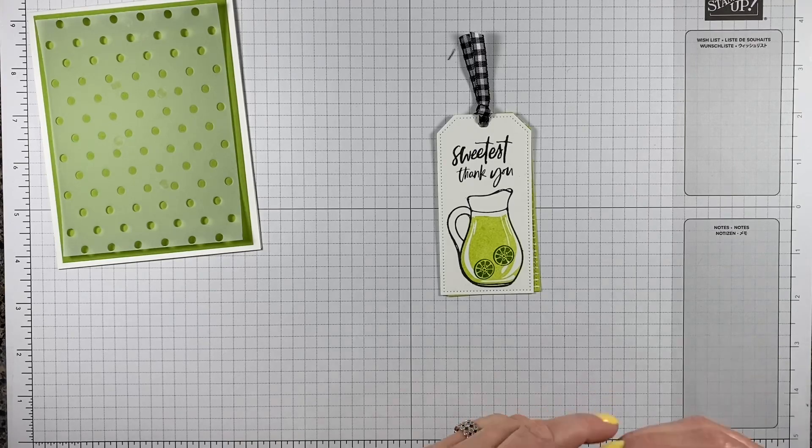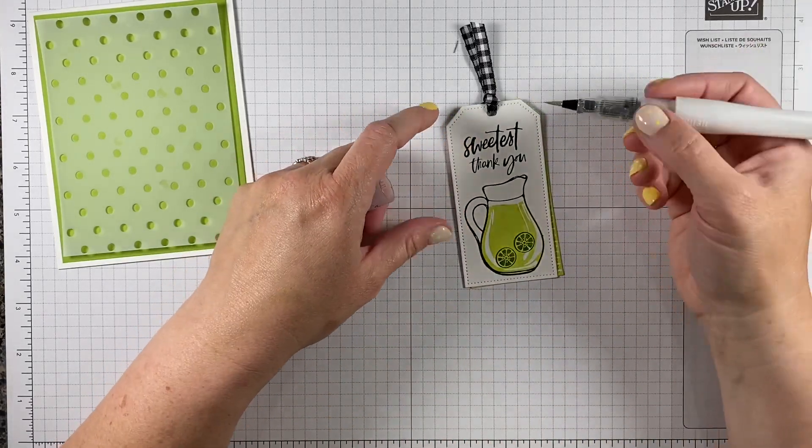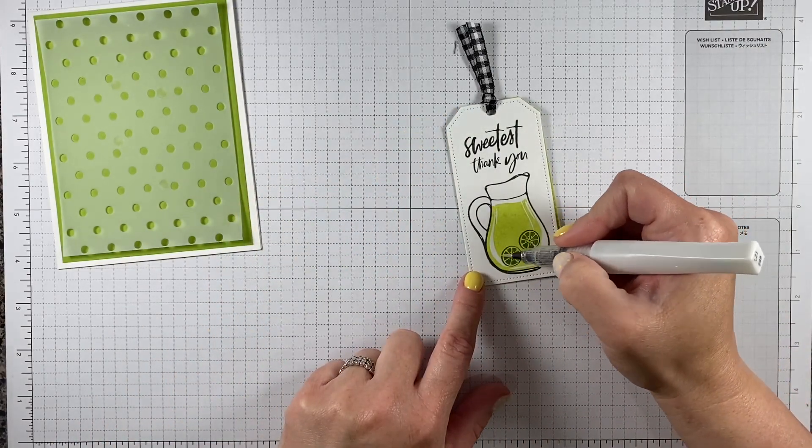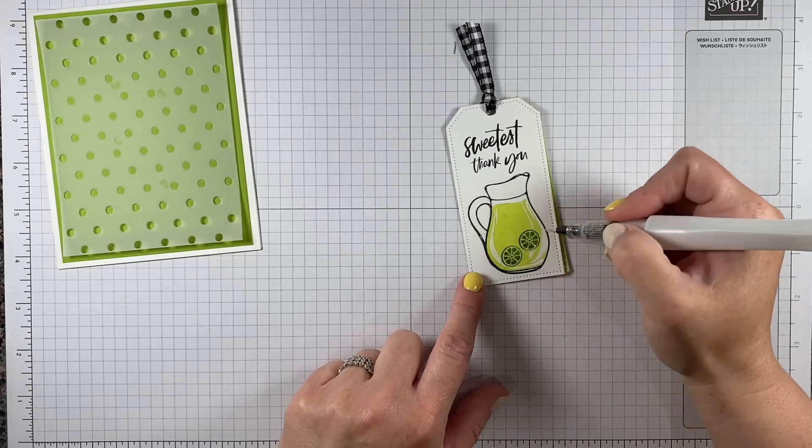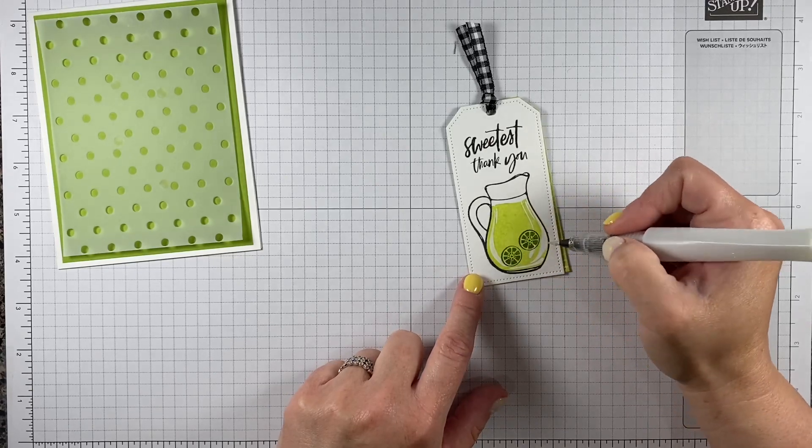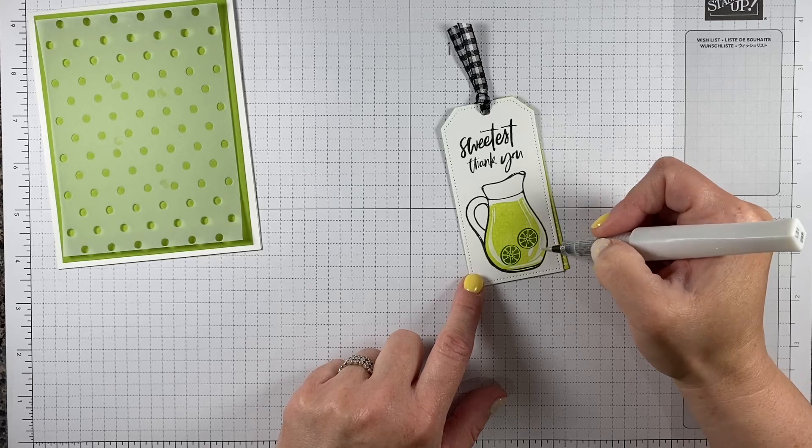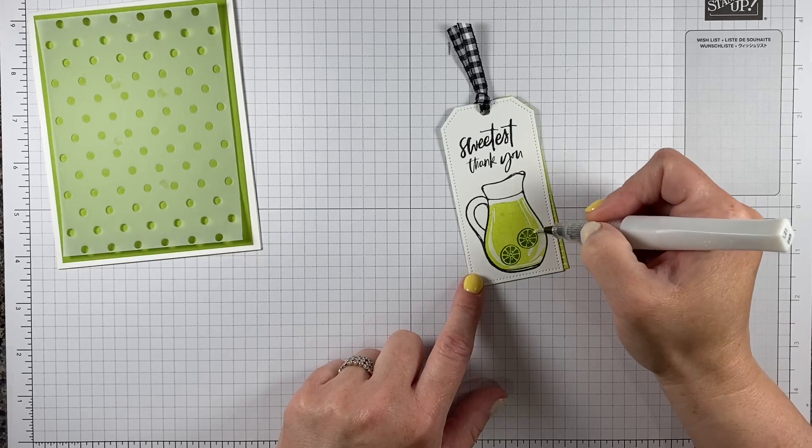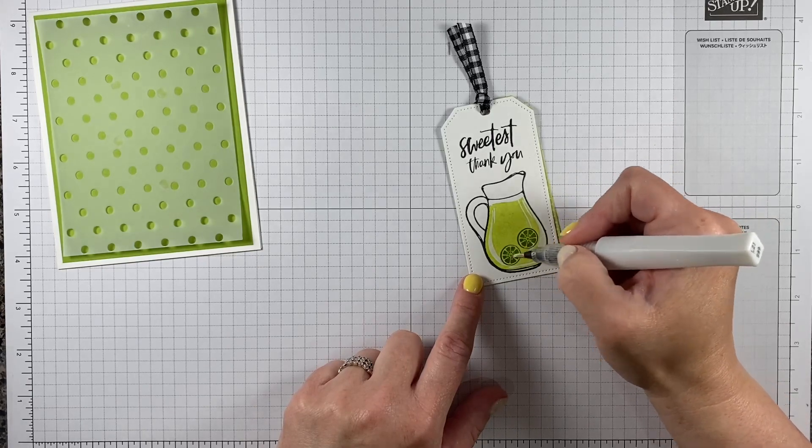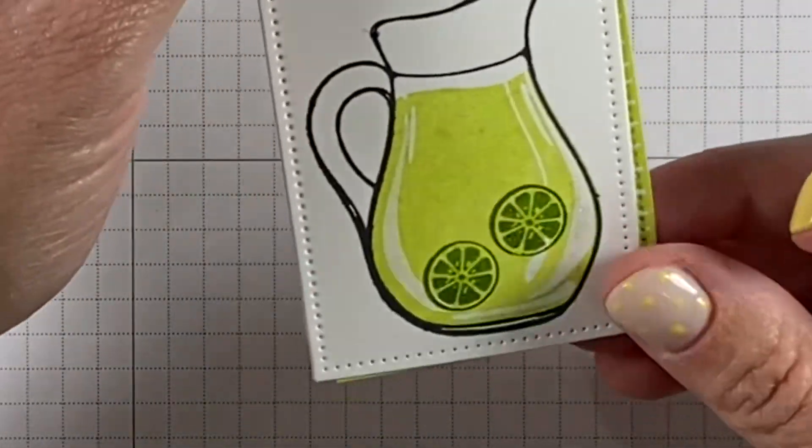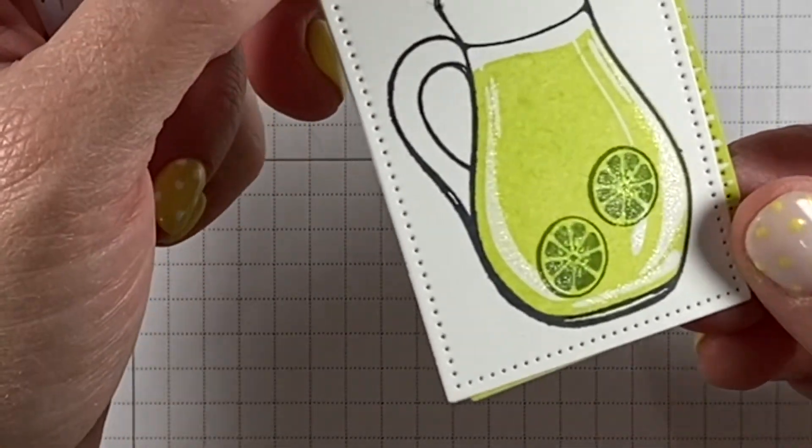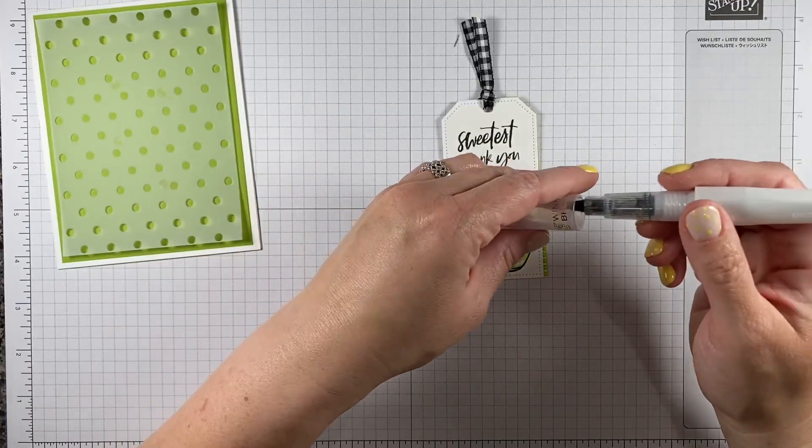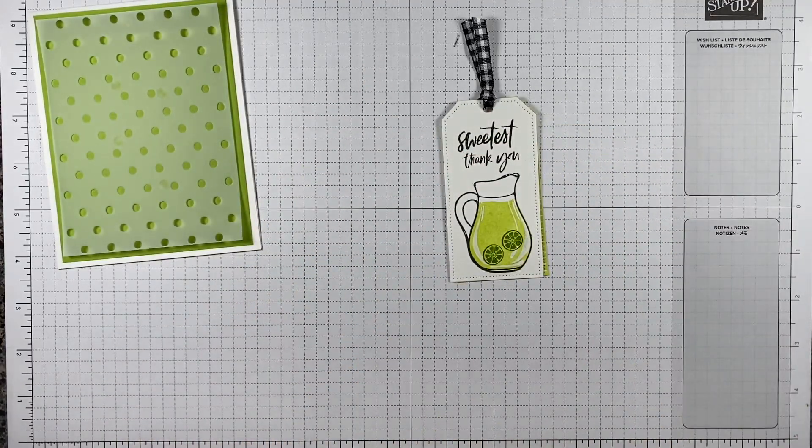I just stamped two cute little limes floating in my drink there. I'm going to come in as well with my Wink of Stella glitter brush and go right here. The stamp is so awesome. It's got these white marks that give it such dimension, like a glowing picture of something delicious and refreshing would look. I'm just kind of making those extra notable by putting some sparkle on top of them. I don't know how easy that is to see on the video, but this has a really nice shine to it, kind of a little glitter brush.